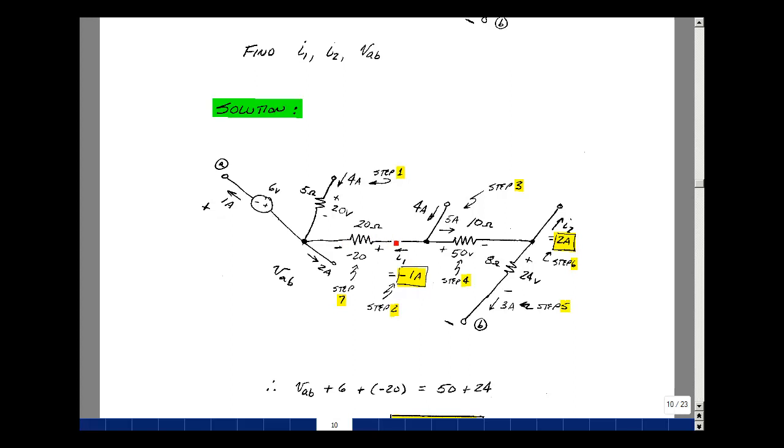I now know that there's 1 amp entering here and 4 amps entering, so I've got 5 amps leaving, and that's my third step. If I know the current is 5 amps and I have 10 ohms, then 5 amps times 10 ohms is 50 volts. That's my fourth step.